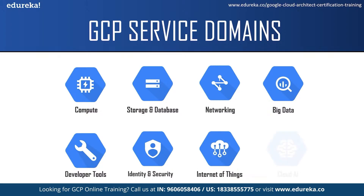The next service domain is GCP IoT. GCP provides an intelligent IoT platform which is scalable, fully managed and integrated. It lets you connect, store and analyze data at the edge and in the cloud. Finally we have Cloud AI. GCP provides fast, scalable and easy to use AI offerings including an artificial intelligence platform, video and image analysis, speech recognition and multi-language processing. These were the few core service domains of GCP.